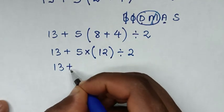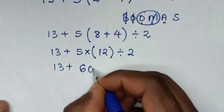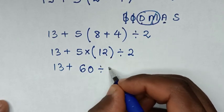It will be 13 plus 5 times 12, which is 60, then divide by 2.